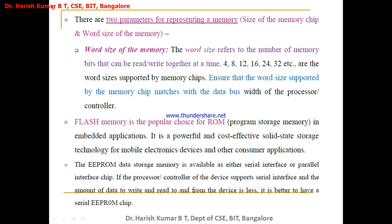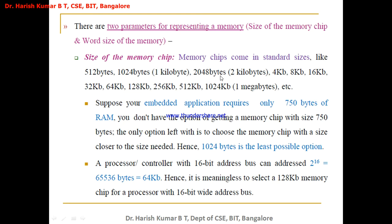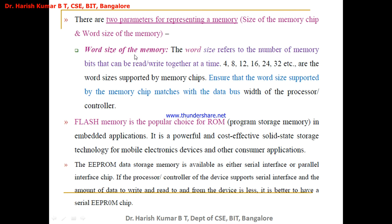Next, the second parameter is the word size. The word size refers to the number of memory bits that can be read or written together at a time. It starts from 4-bit, 8-bit, 12-bit, 16-bit, 24-bit, 32-bit, and so on. So if I say a word size is 16, I can write or read 16 bits at a time.